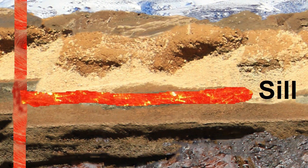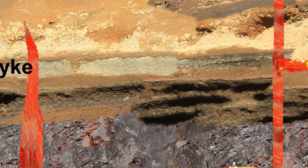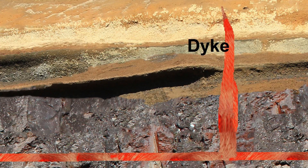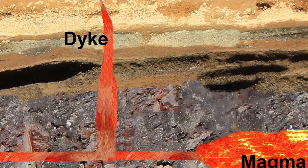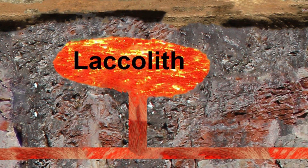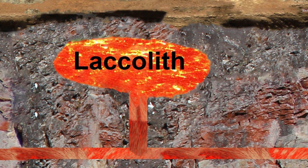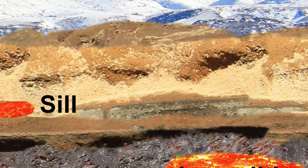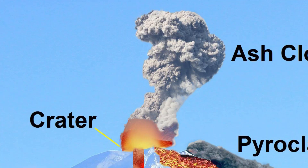The magma may stay underground in horizontal layers called sills. It may cut through adjacent rock layers to form dykes. The magma may stay underground in reservoirs called lacoliths. The magma might enter an existing vent and blast out the plug.